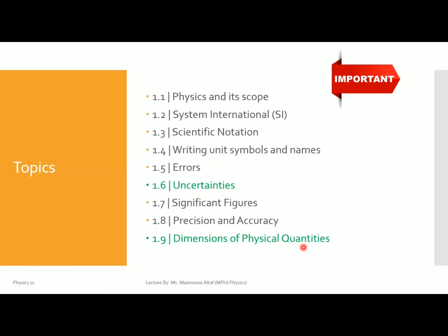It does not mean the rest of the topics are not important — those are also important. But the most important topics of this unit are topic 1.6 (Uncertainties) and topic 1.9 (Dimensions of physical quantities). In each paper there are more questions from these two topics. You also have to prepare significant figures, precision, accuracy, and errors, as objective and short questions can be asked from these.